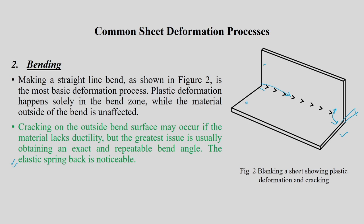Suppose the angle is 90 degrees and bending is over, then we remove the load. It will not be 90 degrees — it will be a rather different angle. That change in dimension is because of elastic spring back. This spring back has to be minimized, and there are several methods people follow. If you allow spring back, assembly of these parts with respect to other parts will be a difficult task.